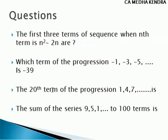The next question: find the 20th term of the progression 1, 4, 7, and so on. The common difference is 3, so it is arithmetic progression. We have N equal to 20, A equal to 1, D equal to 3. We can find T20 easily using the formula TN equal to A plus (N minus 1) into D.